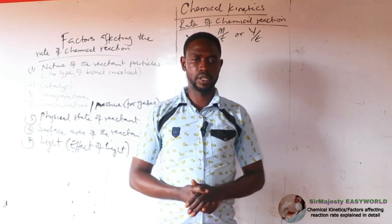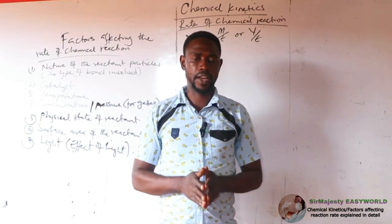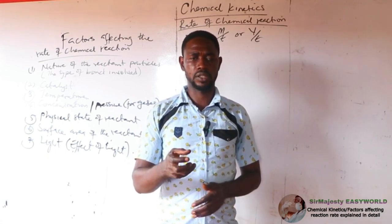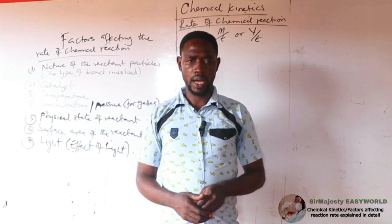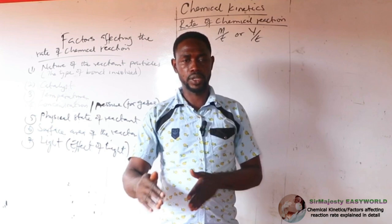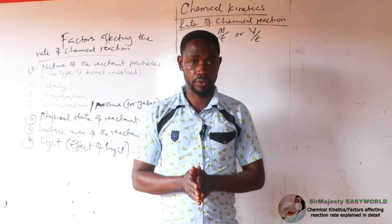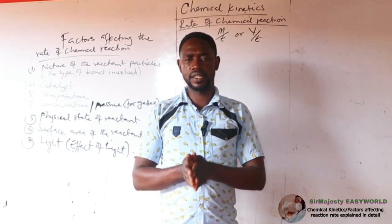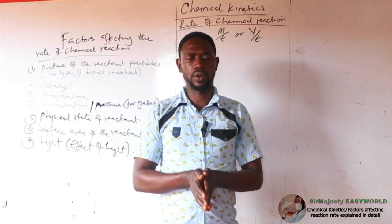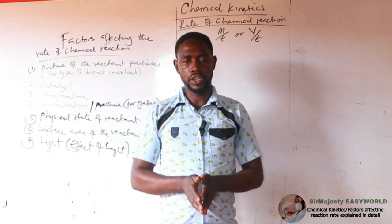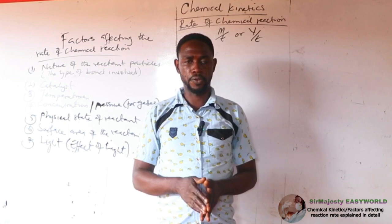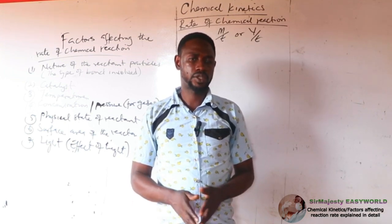In practice, if you react iron filings with hydrochloric acid, there will be a slow effervescence of hydrogen gas because iron is a bit lower in the activity series, closer to hydrogen. But if you replace the iron filing with sodium metal, the reaction becomes vigorous and may even catch fire. If you replace it with potassium, it becomes even faster because potassium is more reactive than sodium.